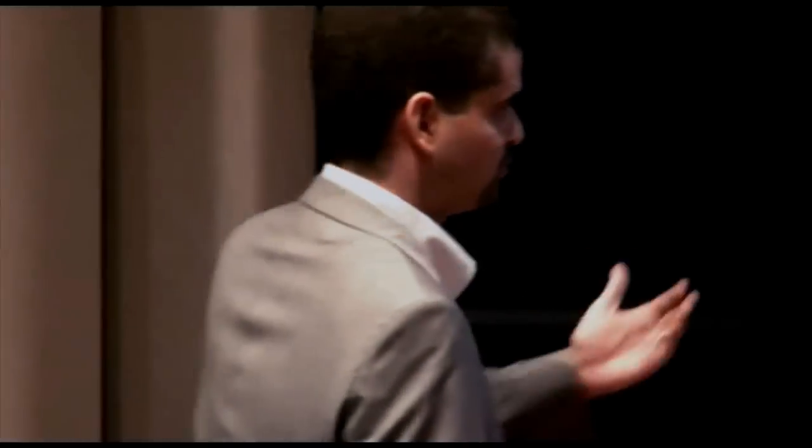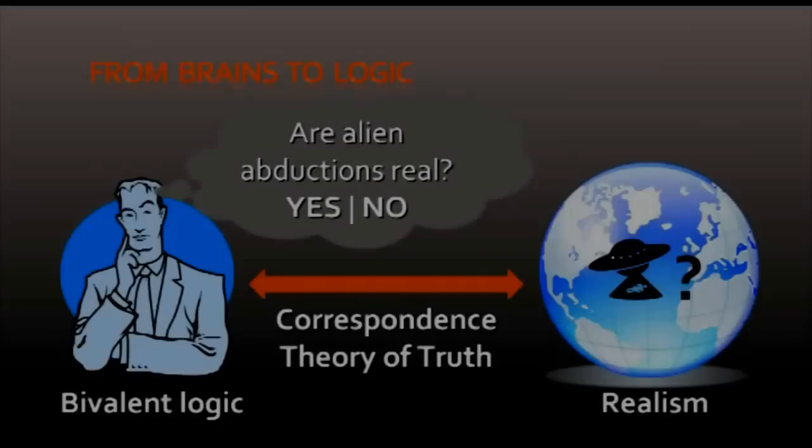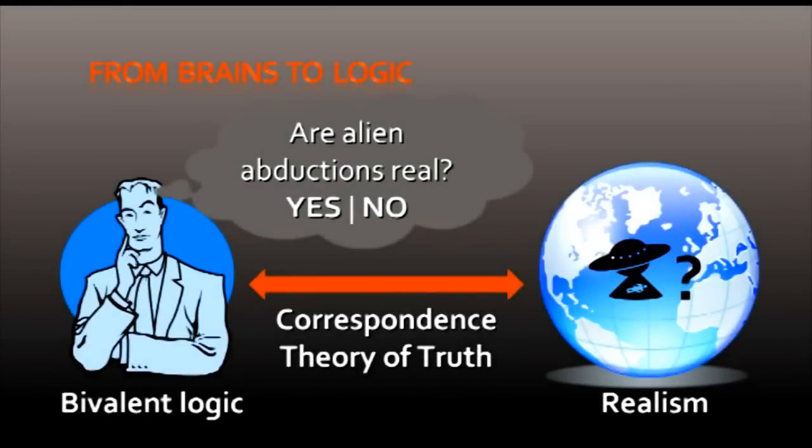And it is the hard objective facts of that world that ground our knowledge of reality. So if there are literal spaceships coming down and beating people up against their will, then yes, alien abductions are real. True. One. In all other cases, false. Unreal. Zero. Very bivalent. This link between the objective facts of the world and how we think of reality is what the logicians and philosophers call the correspondence theory of truth. And it is the only reason for our bivalent thinking. It is the only justification for us to think bivalently in terms of either true or false.